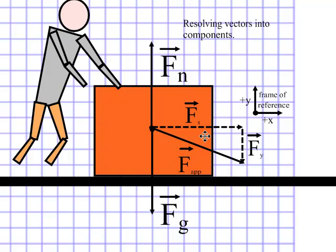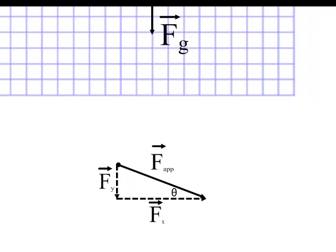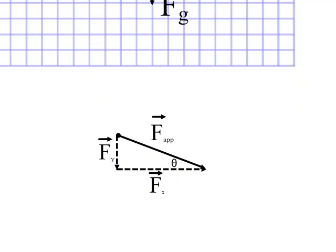Now, provided I know my angle, I can actually just use SOHCAHTOA to find out what the x component and the y component are. There we go, there's our triangle, we have our applied force, we've got our angle, we've got a y component, and we've got an x component.